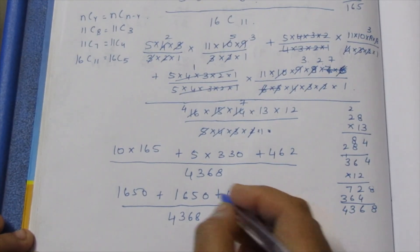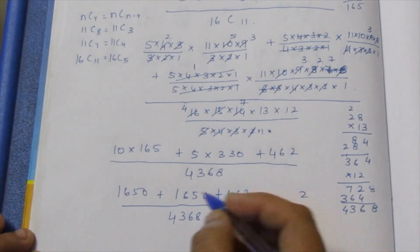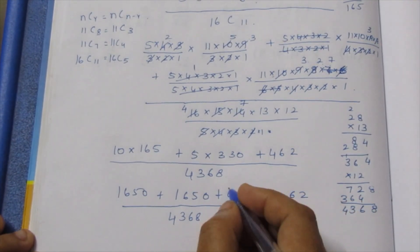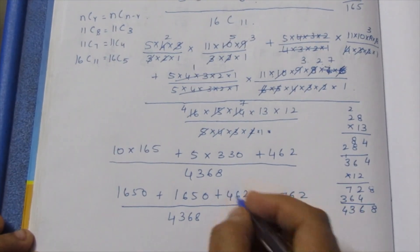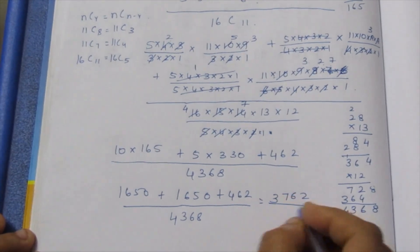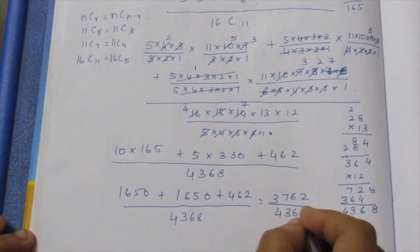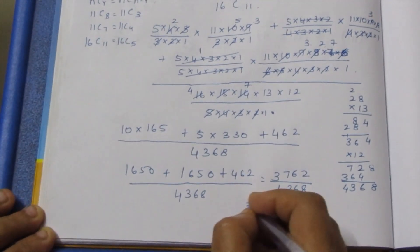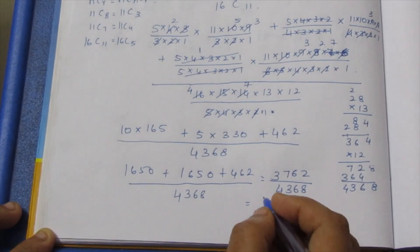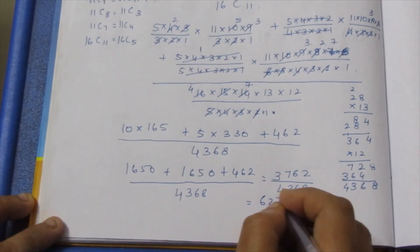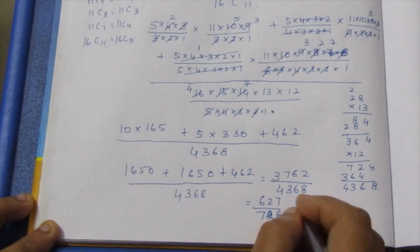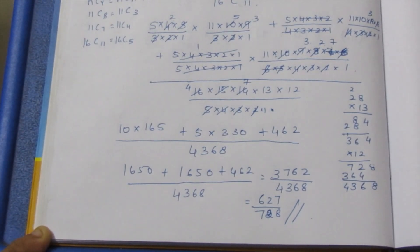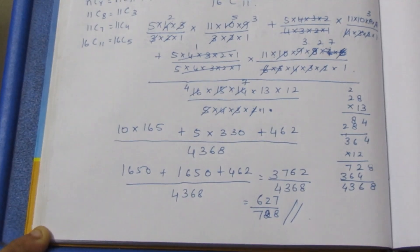Adding up: 2, 10, 16, 1, 10, 17, 1, 3, 5, 4, 3, 6, 8. After cancellation, the final answer is 627 by 728. So this is the final answer for question 9. Thank you.